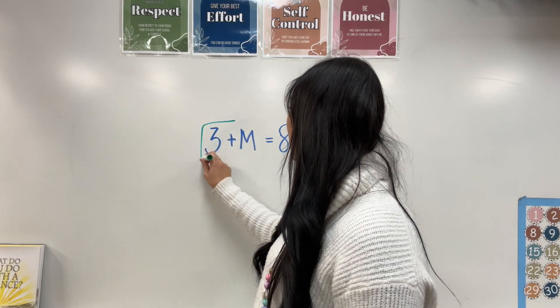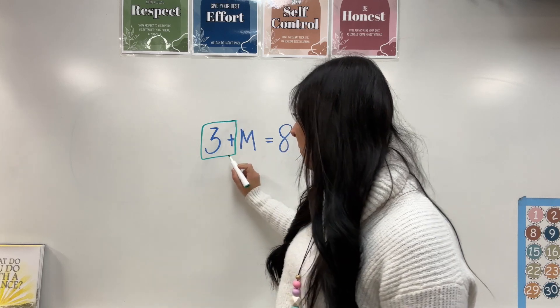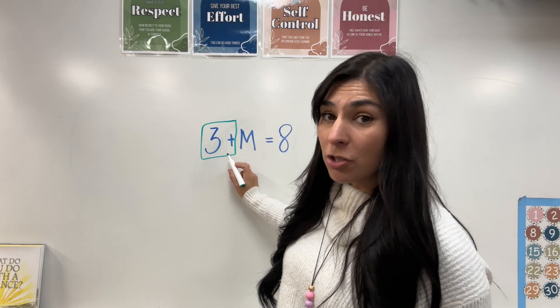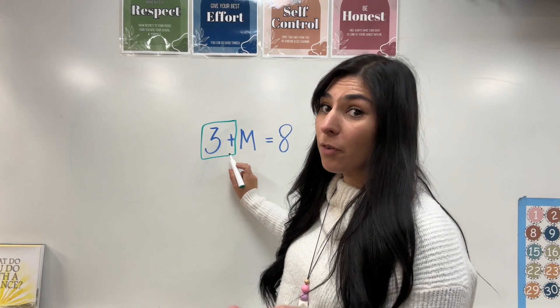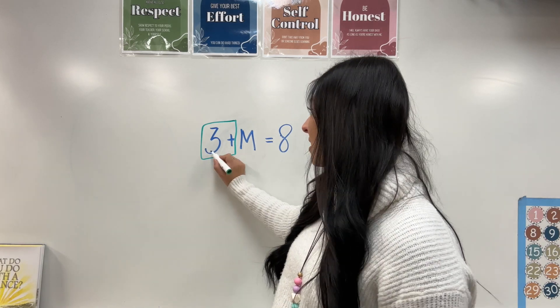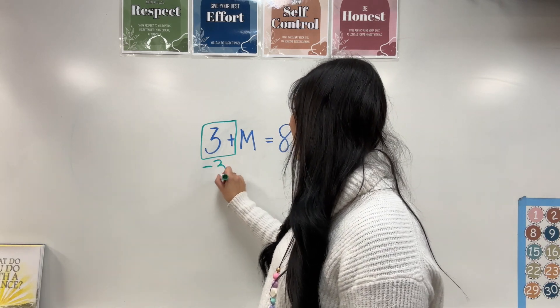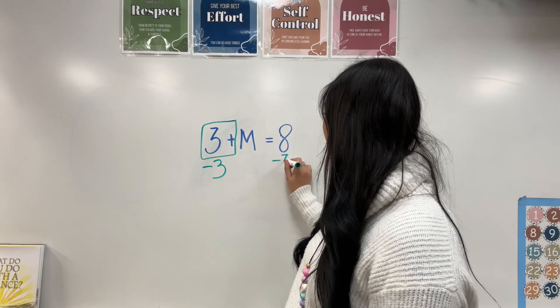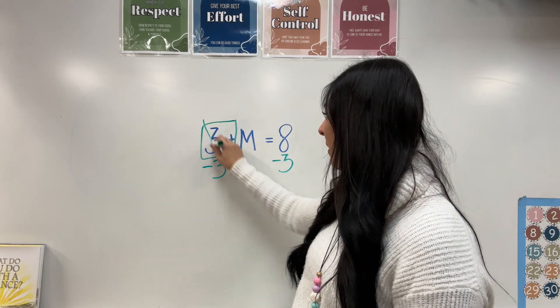So that means these are together. I need to now find the inverse operation for addition. The inverse of addition is subtraction. So if this is plus three, I'm going to minus three on both sides of the equal sign. Now I can cross this out.